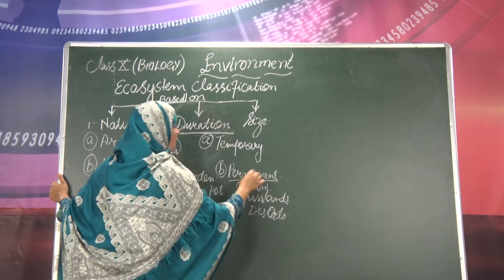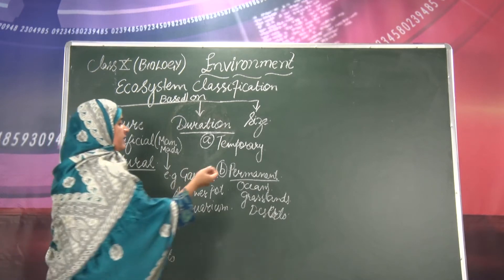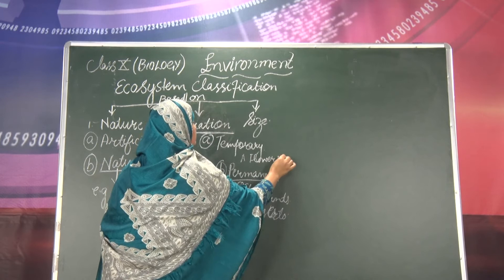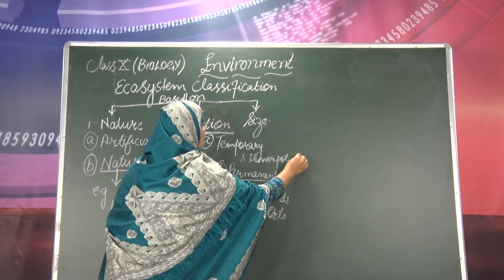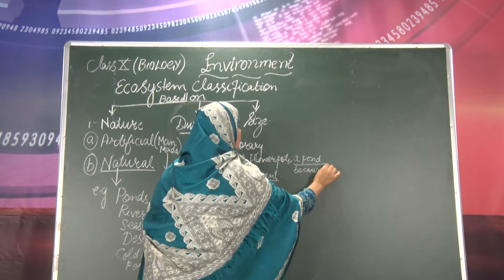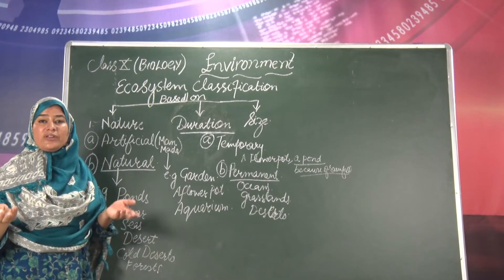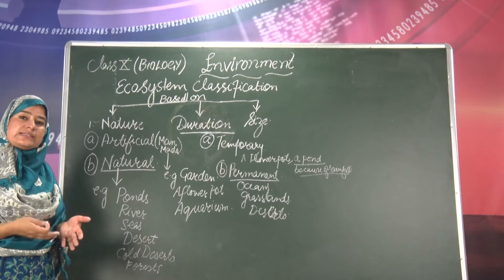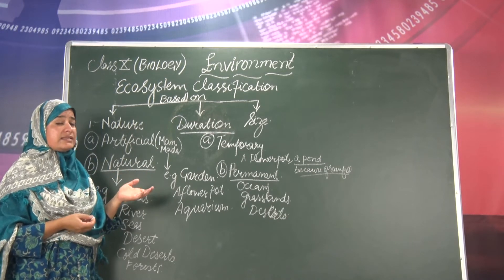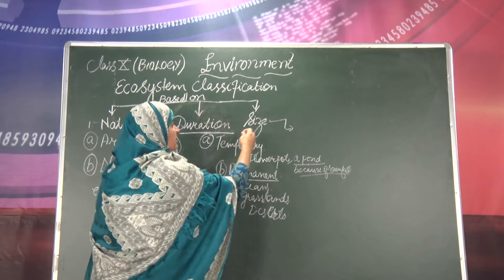When we talk about temporary ecosystems, they can be natural or manmade. For example, a flower pot is temporary — it is not permanent. Similarly, a pond created because of rainfall is temporary; once the water dries up, this pond will no longer last. So it is a temporary kind of ecosystem.